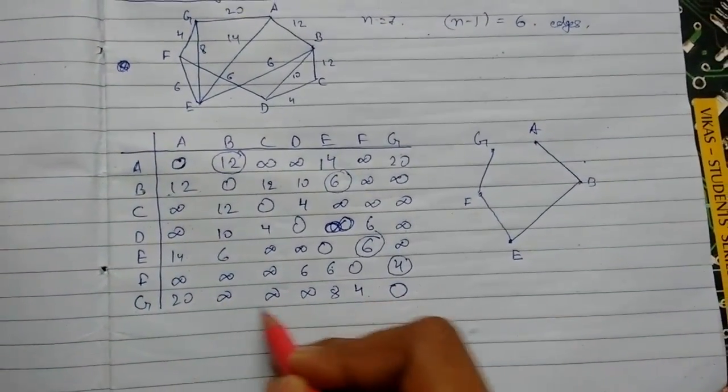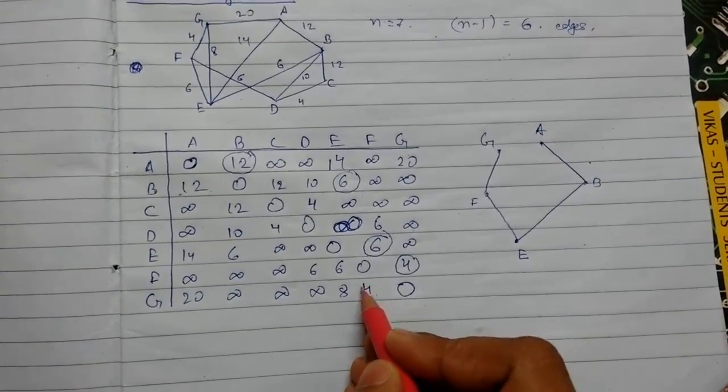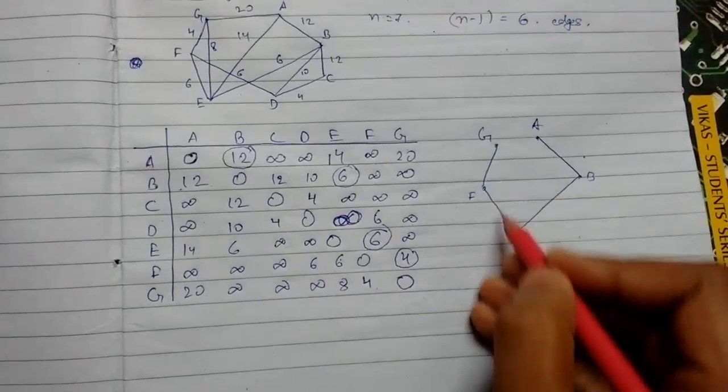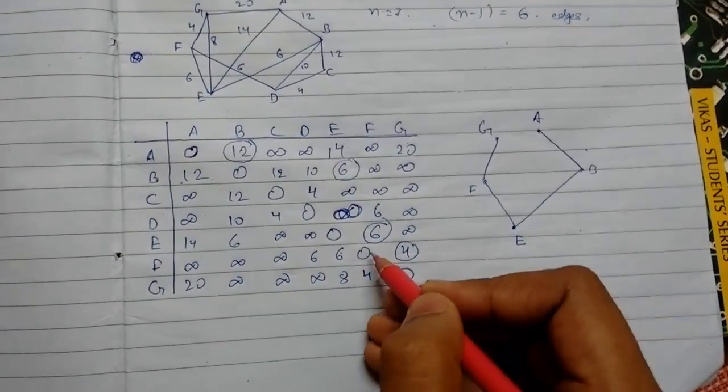Now in G, we can see if we will take this value it will become a circuit. We'll take this value, it will also become a circuit. We cannot take this value, so now we'll go back to F.